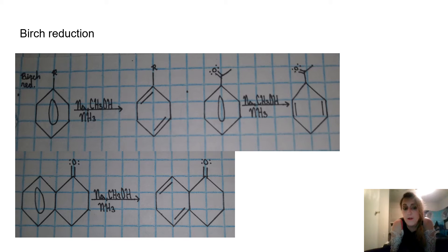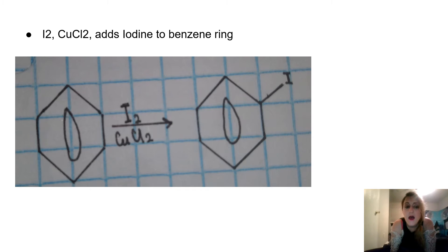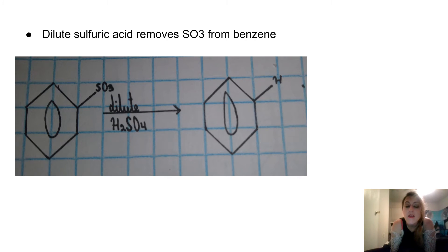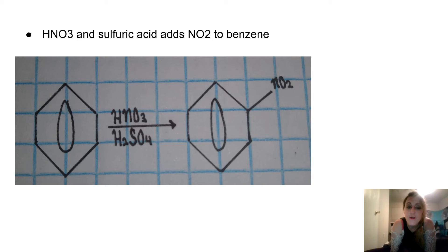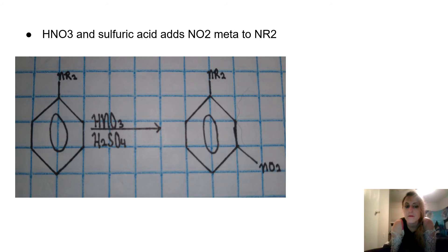Right here we have an example of Birch reduction. I2/CuCl2 adds iodine to a benzene ring. Fuming sulfuric acid adds a sulfonyl group to benzene. Dilute sulfuric acid removes SO3 from benzene. HNO3 in sulfuric acid adds NO2 to benzene. HNO3 in sulfuric acid has no reaction with benzene that has NH2 attached to it. HNO3 in sulfuric acid adds NO2 meta to NR2.